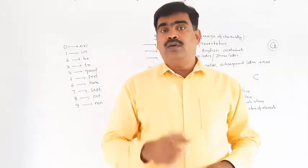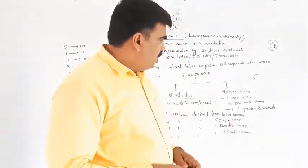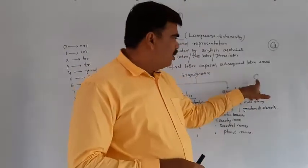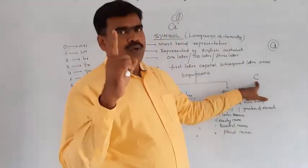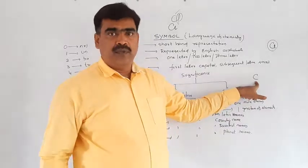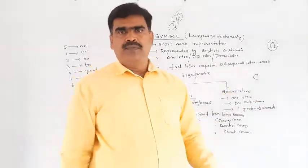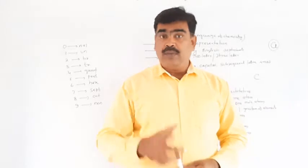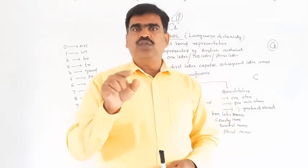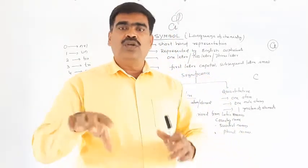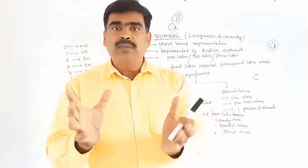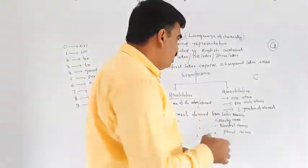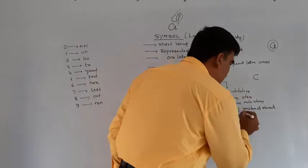Quantitatively, a symbol represents: one atom of the element, one mole of atoms, Avogadro's number — 6.023 × 10²³ atoms — and one gram atom of the element.